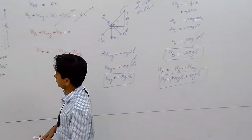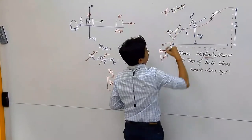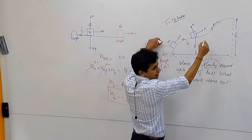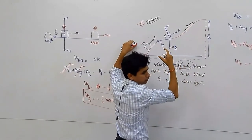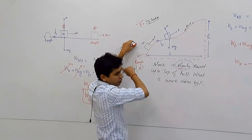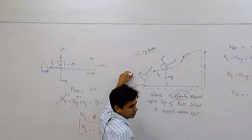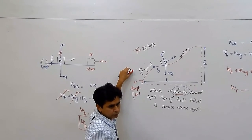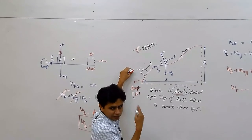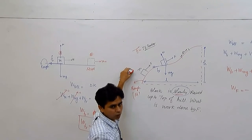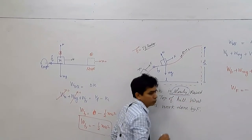There are two key points in this question. First, you should not treat the hill as a normal inclined surface — you can only treat a small portion as a small inclined surface. Second, capital F is not given, so you cannot calculate force times distance directly. Whenever force or distance is unknown, use the work-energy theorem, which automatically gives you the answer.